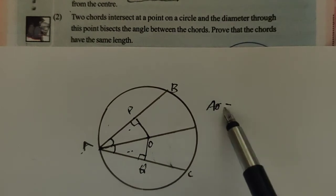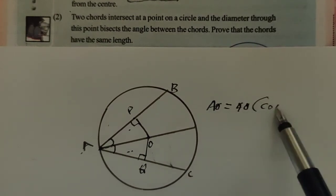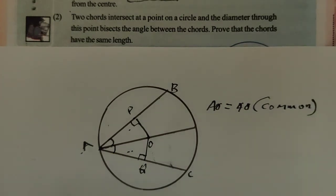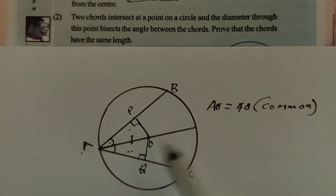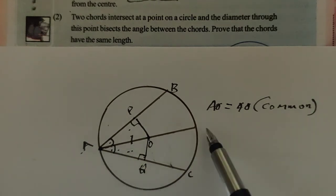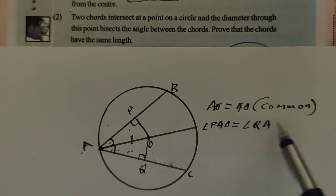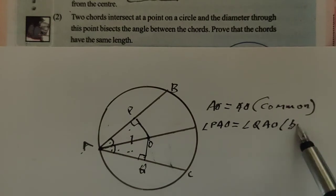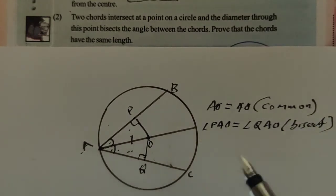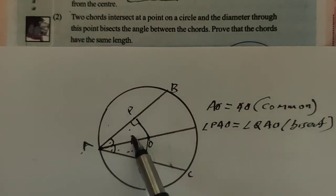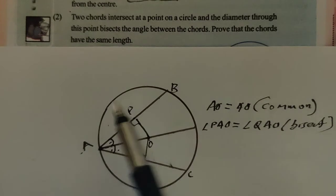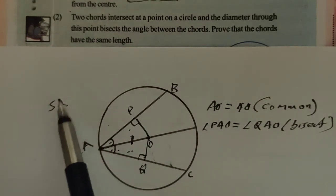We want to prove these two triangles are congruent. AO is a common side, equal in both triangles. Comparing the two triangles, AO equals AO — that is the common side. Also, angle PAO of the upper triangle equals angle QAO of the lower triangle. The reason: the diameter bisects the angle, which is given. So now we have one side and one angle equal.